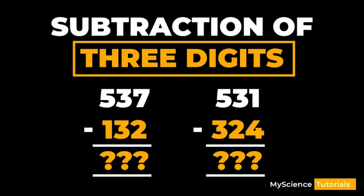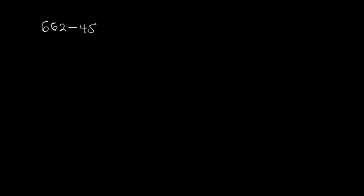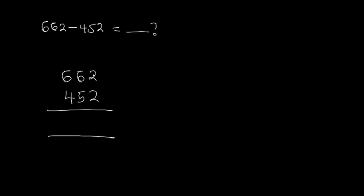Hello and welcome back. In today's video we want to look at the subtraction of three-digit numbers. Let's start with an example: we have to subtract 452 from 662. We write 662 on top, then 452 below it, making sure all digits are well aligned. We label the ones column, the tens, and the hundreds.